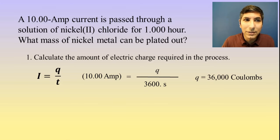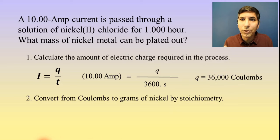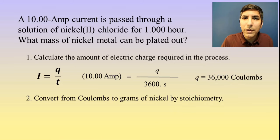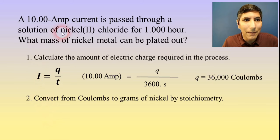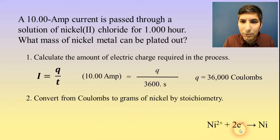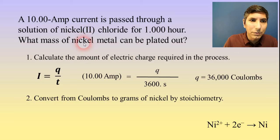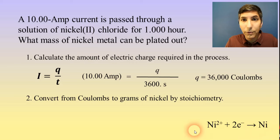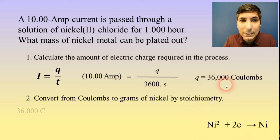That's not the final answer — the question asks what mass of nickel metal can be plated out, so we have to convert from Coulombs to grams of nickel using stoichiometry. To do a stoichiometry problem we need a balanced equation. We're starting with nickel(II) ions being turned into nickel metal, so the balanced half reaction is: Ni²⁺ + 2e⁻ → Ni. Now we can do our stoichiometry, starting with 36,000 Coulombs.